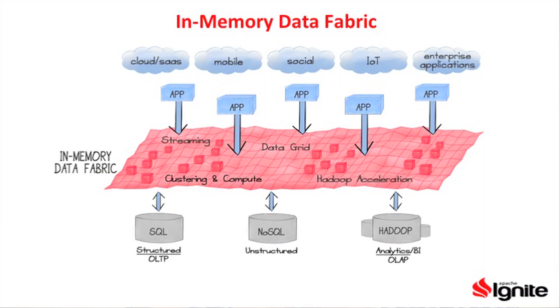Some of the must-have features for a data grid would include distributed in-memory transactions and distributed queries. Apache Ignite, for example, has fairly feature-rich SQL support, which is ANSI-99 compliant, and also collocation of compute and data. Now, if you look at in-memory data fabrics, they actually represent a newer generation of products, which reside between your application layer and your data store layer. The main purpose of in-memory data fabric is to improve performance and scalability of your application.